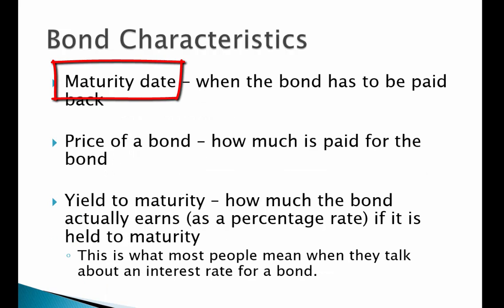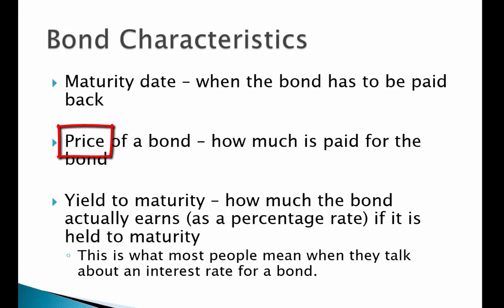The maturity date of the bond is an important component — it simply states when the bond has to be repaid, when the investor should get that par value back. The price of the bond is how much is paid up front for the bond, and again, that may or may not be equal to how much the borrower is borrowing.